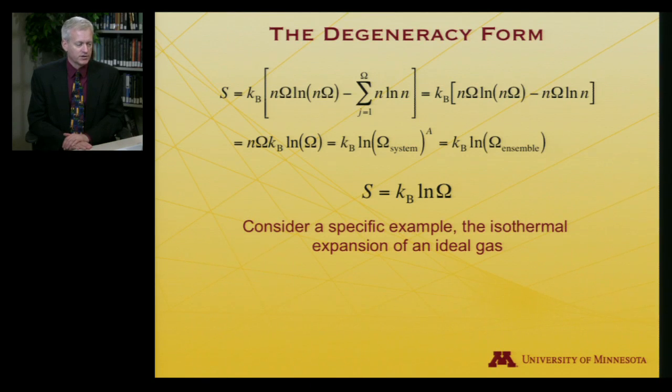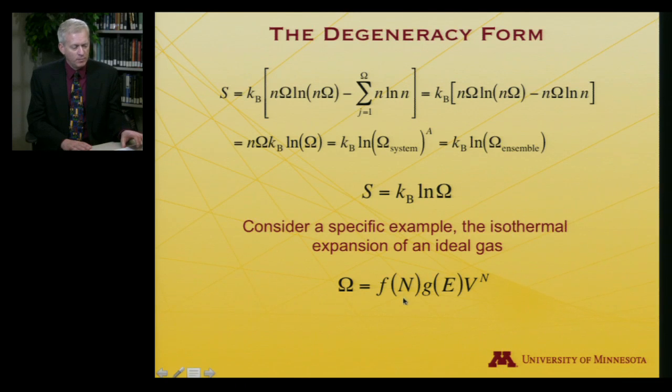Let's consider a specific example to hammer this point home. Imagine that I'm going to isothermally expand an ideal gas, and I'm interested in an entropy change. So what is the degeneracy available to that ideal gas? Well, it's going to be some function that depends on how many molecules I have. It's going to be some function that depends what is the energy of the ideal gas. This is isothermal, so it's constant energy as I do the expansion.